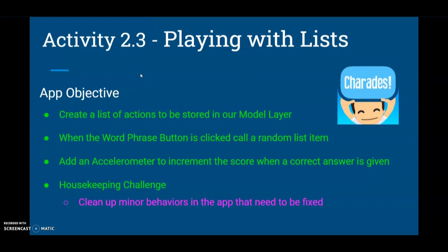Today we're going to take a look at the second part of our charades game app in Activity 2.3: Playing with Lists. Our app objective is to learn how to create a list of actions stored in our model layer, or data layer. We'll access that information when we click the word phrase button and call a random list item. We'll also add an accelerometer sensor to detect shaking and increment the score for a correct answer. At the end, we'll look at a housekeeping challenge to fix some minor app behaviors.